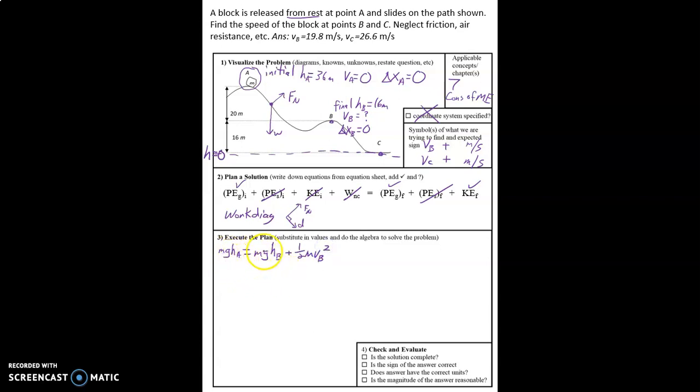So now we can write this in. We can say MgHA equals MgHB plus one half MvB squared. Now we look carefully. There's mass here, mass here, mass here. It's in every single term. Be careful. Sometimes students will try to cancel out the mass when it's in two out of three terms, but that doesn't work. It has to be in every single term. So we can divide through by the mass. Now we can substitute numbers in here.